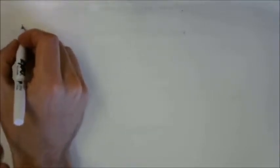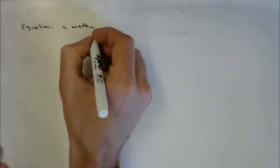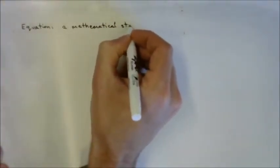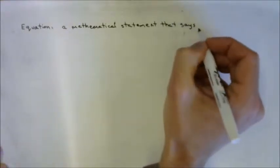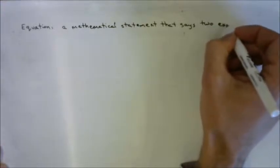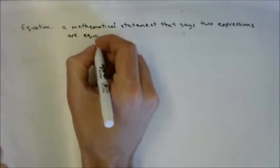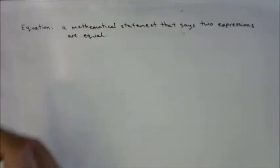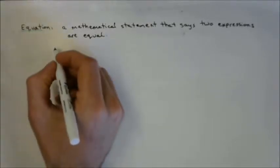We're on 4.1, page 5 in your notebook — solving simple equations. To solve a simple equation, we need to know what those two words mean. The first term is 'equation.' An equation is a mathematical statement that says two expressions are equal. You can see that base word 'equal' in there — equation. An equation has an equal sign, with an expression on the left and an expression on the right.